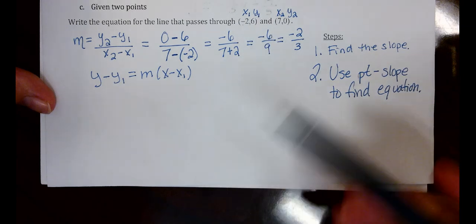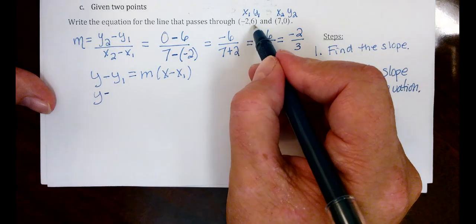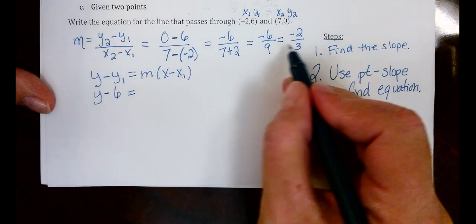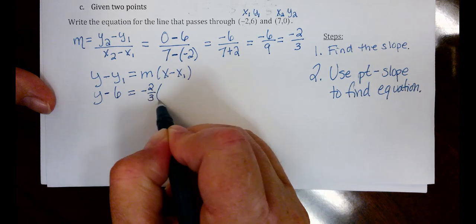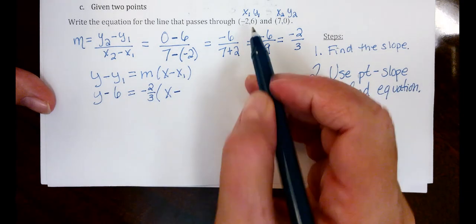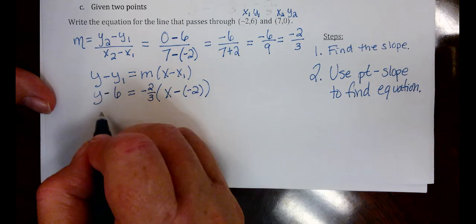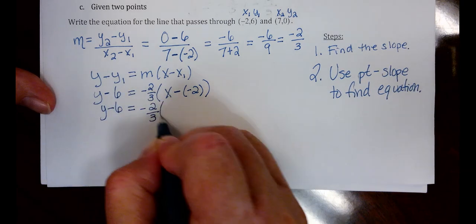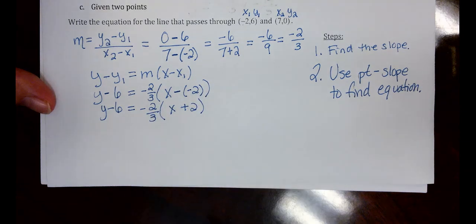Okay, so let's start plugging in. Y minus Y1, that's 6, equals M. We just solved for that. That's our negative 2 thirds. X minus X1 again is negative 2. So careful with the signs here. Let's simplify. Y minus 6 equals negative 2 thirds times X plus 2. So the only thing I did there was correct the negative signs.